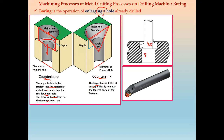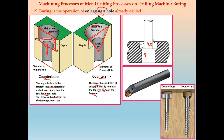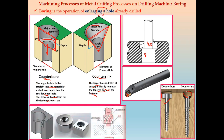In counter sinking, the larger hole is drilled at an angle — typically 60 degrees — creating a triangular or tapered profile, while counter boring has a 90-degree rectangular profile. Counter sinking is done to match the tapered angle of a fastener or screw. The depth is also shallow in both cases. Counter boring allows a fastener to be fixed flush inside a product, while counter sinking allows a countersunk bolt or screw to be fixed.